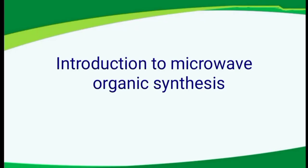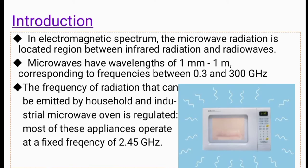Today I am discussing introduction to microwave organic synthesis. In the electromagnetic spectrum, microwave radiation is located in the region between infrared radiation and radio waves. Microwaves have a wavelength of 1 mm to 1 m, corresponding to a frequency between 0.3 and 300 GHz. These are similar to the frequency of radar and telecommunications. Most household and industrial microwave ovens operate at a fixed frequency of 2.45 GHz.